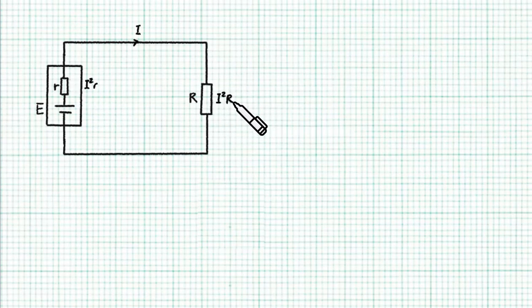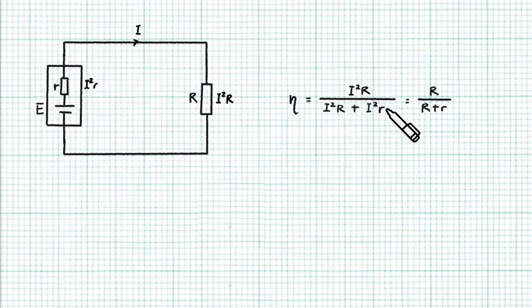So this is useful power, this is wasted power. So the efficiency can be written as the useful power, I²R, divided by the total power of I²R plus I²r. Notice how easy it is if you use I²R instead of V²/R because it's the same current that passes through both internal and external resistance. So all the I's will cancel out and that leaves us with a very neat expression for the efficiency, R over R plus r, the load to the total resistance ratio.